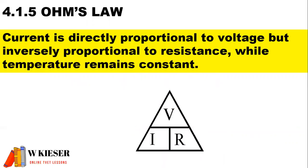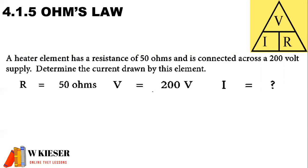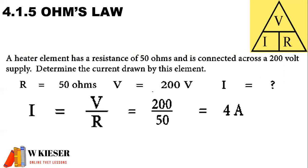To define Ohm's Law: if we look at the pyramid here, it helps us not only define Ohm's Law but also helps us with our calculations. We find that current is directly proportional to voltage but inversely proportional to the resistance, while temperature remains constant. For our first calculation, dealing with Ohm's Law: a heater element has a resistance of 50 ohms and is connected across a 200-volt supply. Determine the current drawn by this element. We've been given a resistance of 50 ohms and a voltage of 200 volts, so current equals voltage divided by resistance, giving us a current flow of 4 amps.